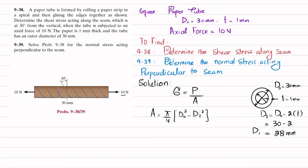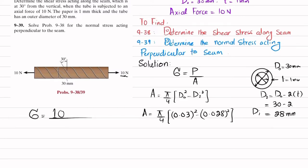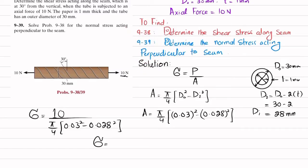So d_inner is 28 millimeters. The area equals (pi/4) times (0.03 squared minus 0.028 squared) square meters. Sigma is the axial force divided by area: 10 divided by (pi/4) times (0.03 squared minus 0.028 squared). When you solve this, the normal stress comes out to be 109.76 kilo pascal.